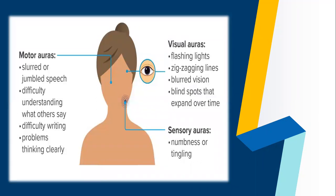There are three types of aura: visual aura, sensory aura, and motor aura. Migraine aura may precede or accompany the headache phase, or may occur in isolation. Visual auras are most common but can be sensory, motor, or any combination of these.